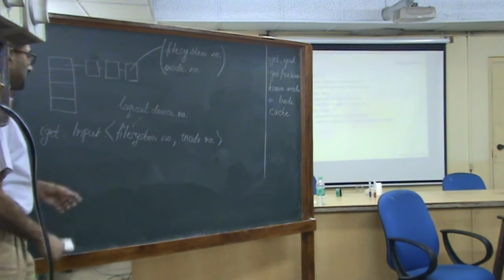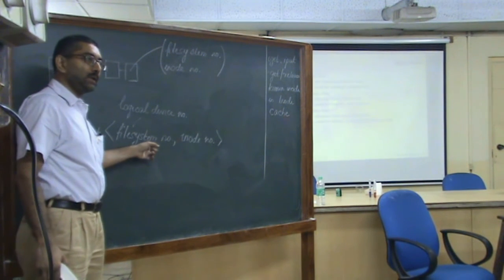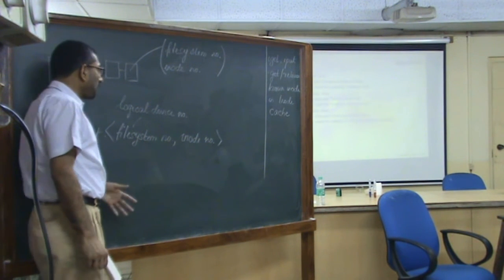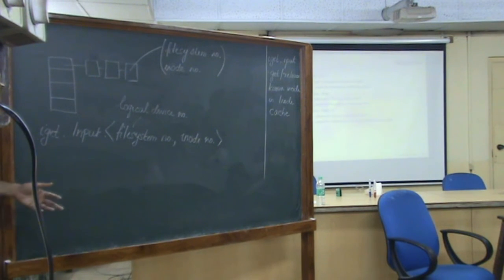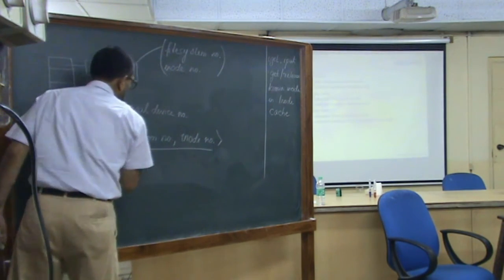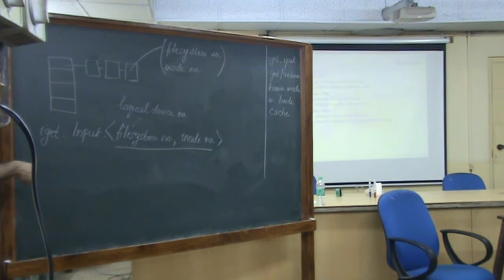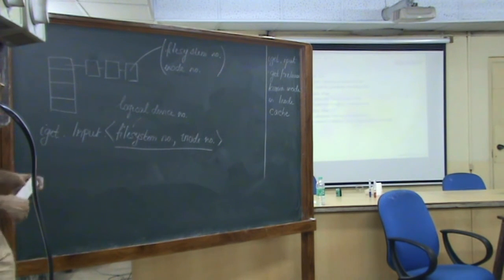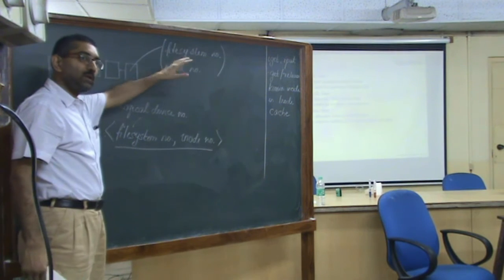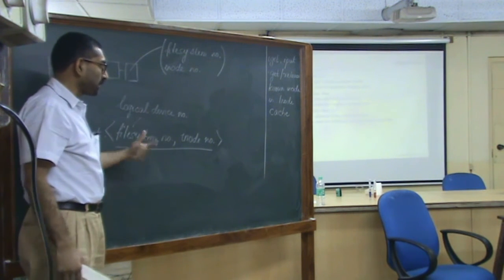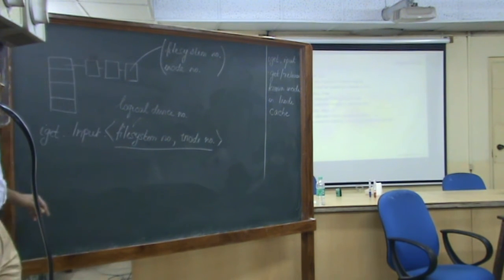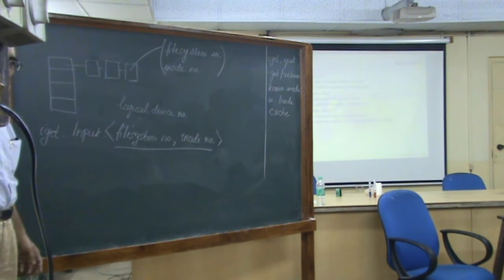What are the two possibilities? The inode we are looking for may already be present in the cache or not. The simpler case is a cache hit: you use the file system ID and inode number to compute the hash function, go to the appropriate bucket, and search the corresponding chain. If you find it, you are mostly done — that is simply a cache hit where you look it up in the hash table and find the inode you are looking for.